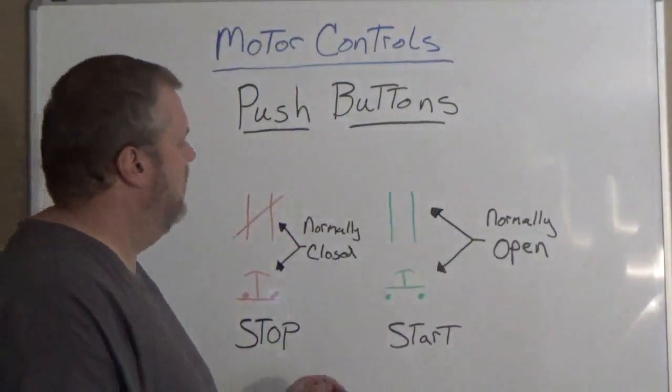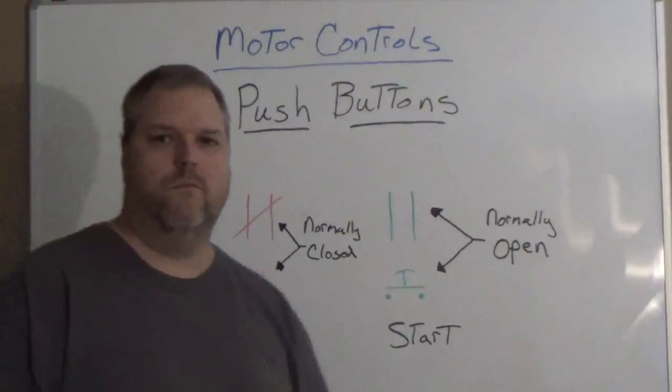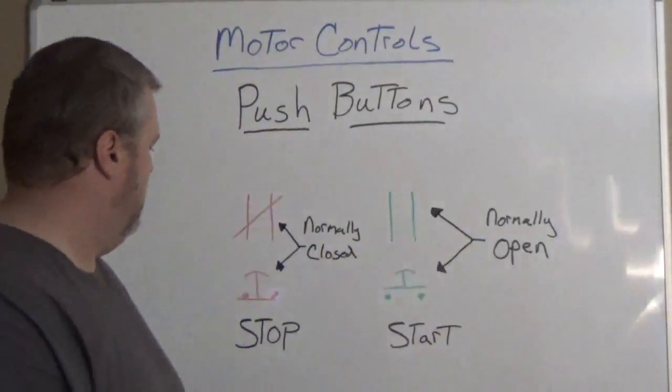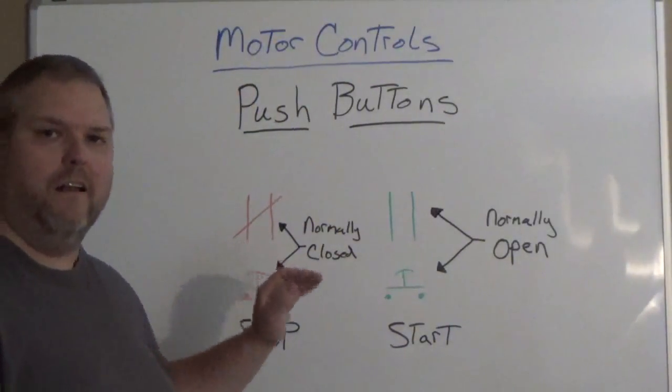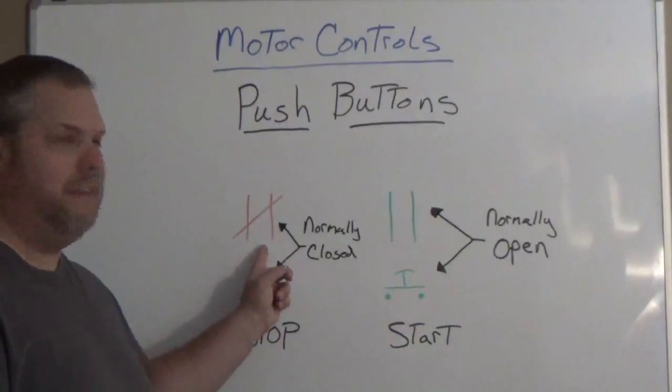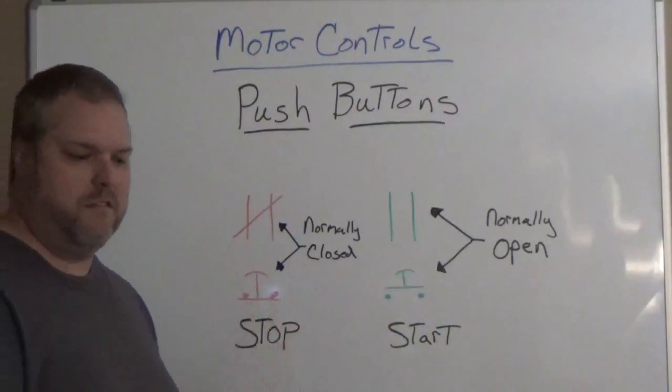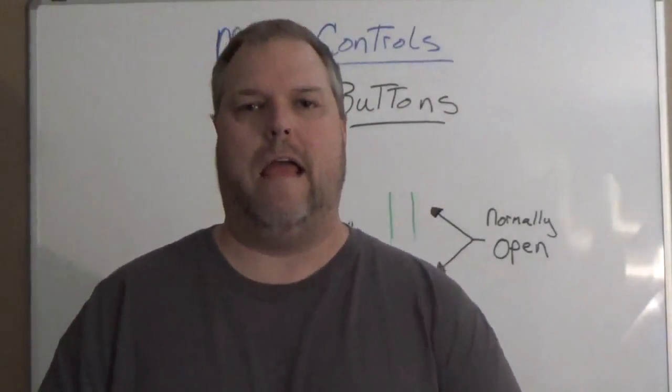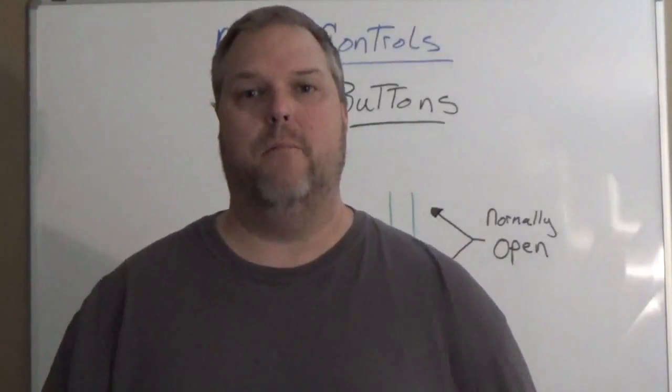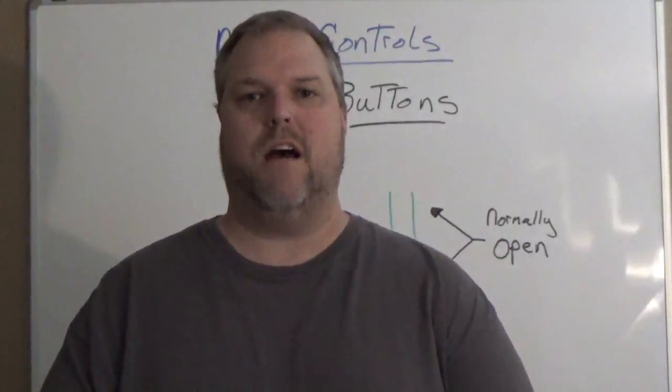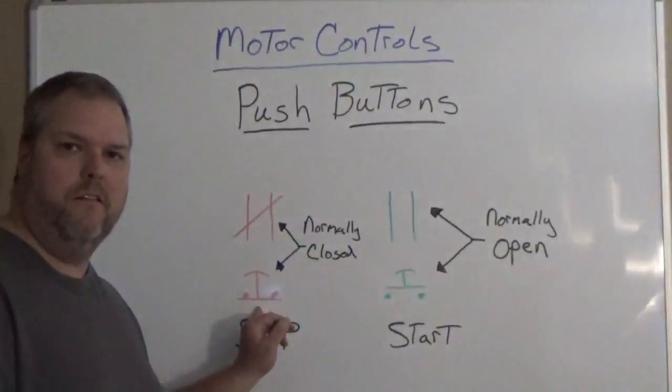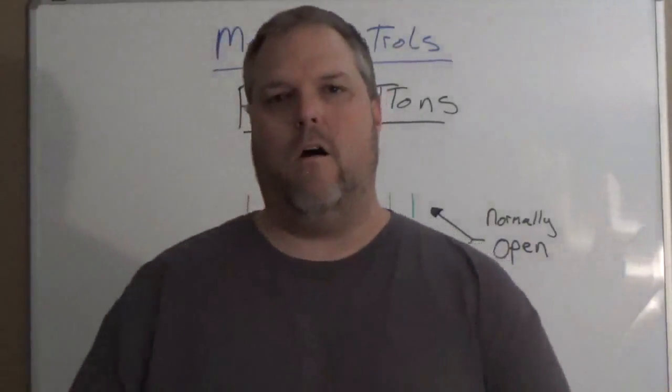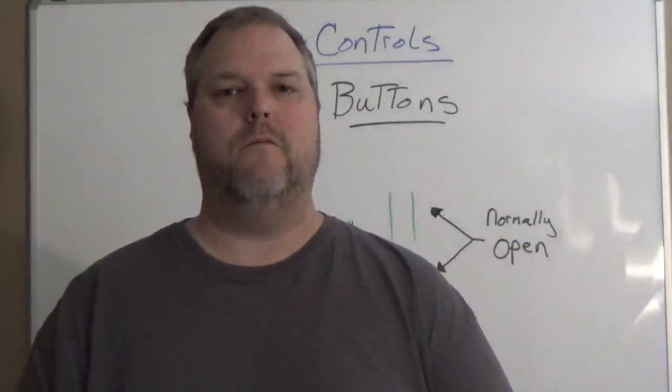We have two states: normally open and normally closed. Normally open on a ladder diagram is drawn like this, but also can be drawn like this. The symbols vary. ANSI does have a standard and they're both correct. Sometimes we have a push button, but here we actually have a contact.